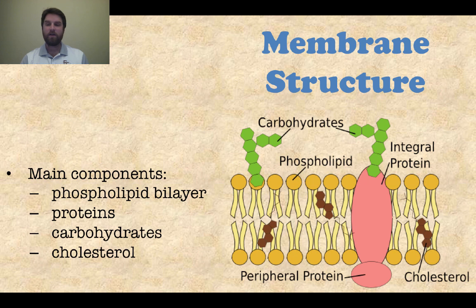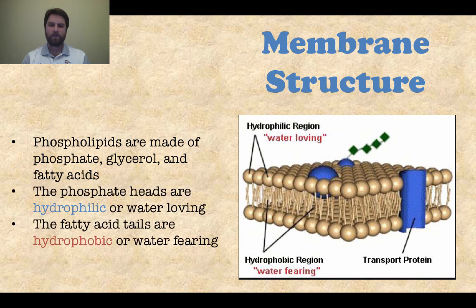As you can see here, the proteins are usually integrated into the entire membrane. Carbohydrates are usually sticking out towards the outside of the cell and then cholesterol is kind of within those fatty acid chains within the bilayer of the actual cell membrane. So let's talk a little bit more about structure here. Here's another little picture as you can kind of see it in a different way. So those phospholipids are made of phosphate, glycerol, and fatty acid.